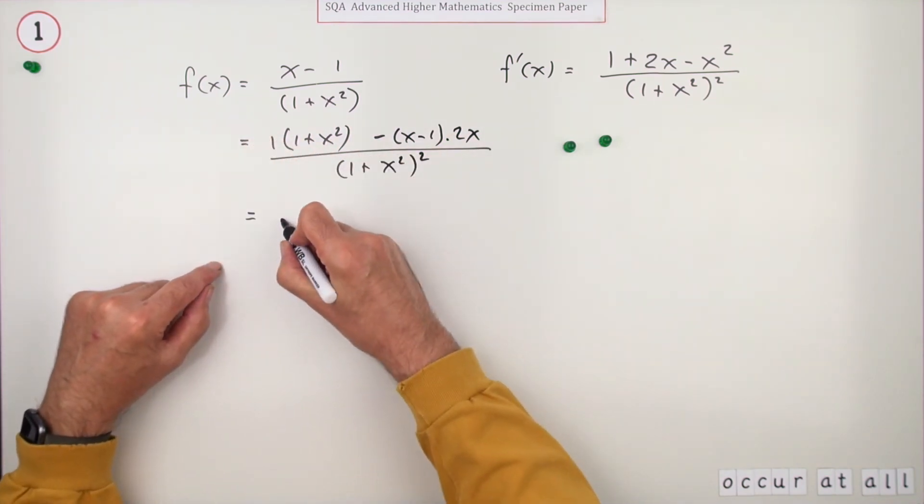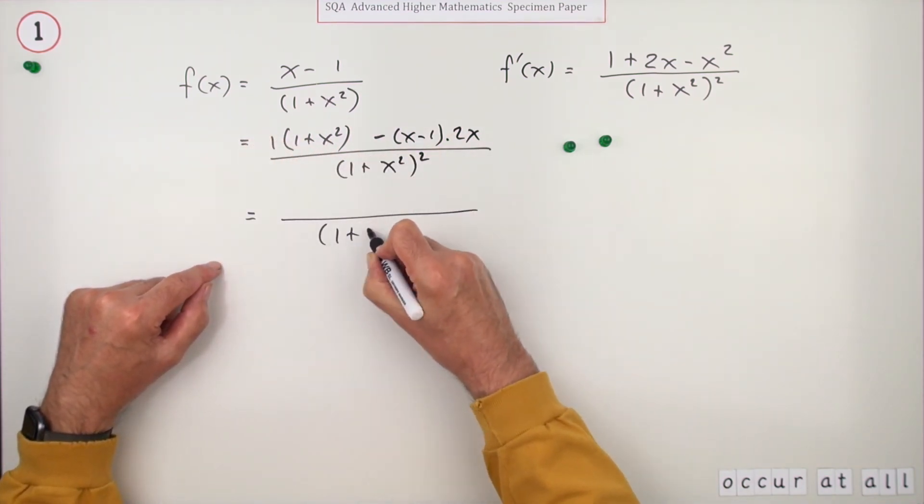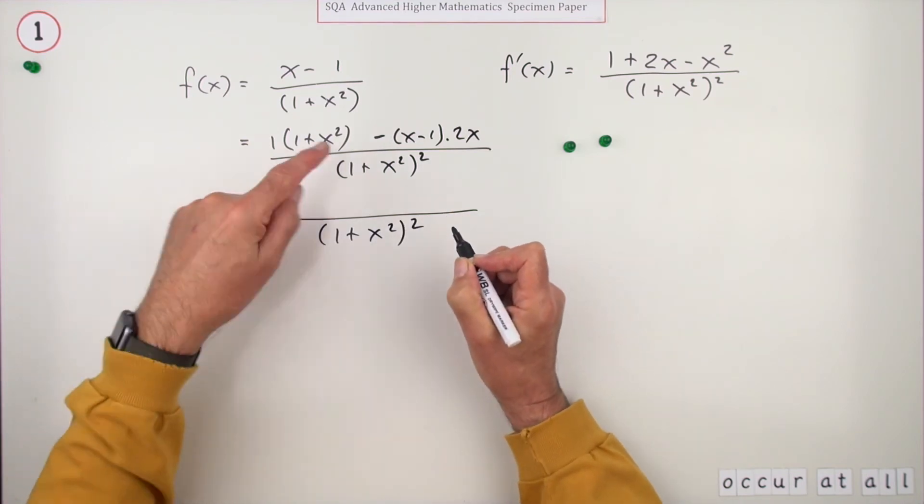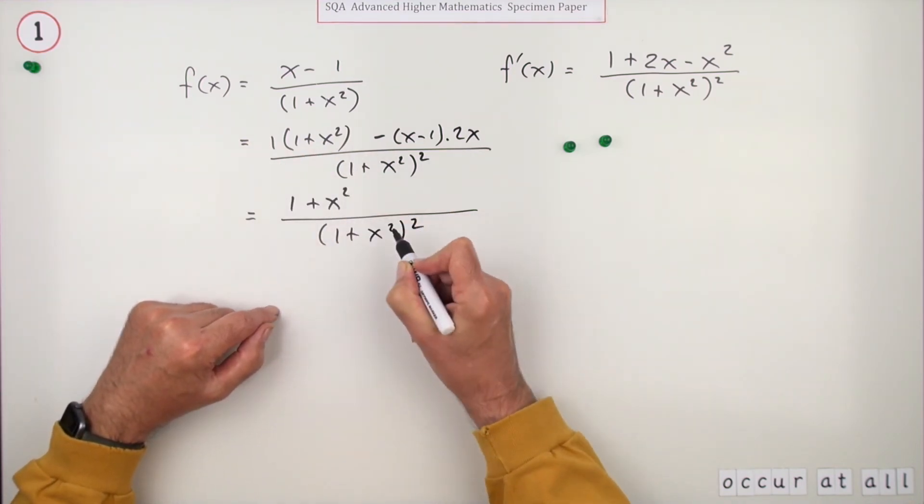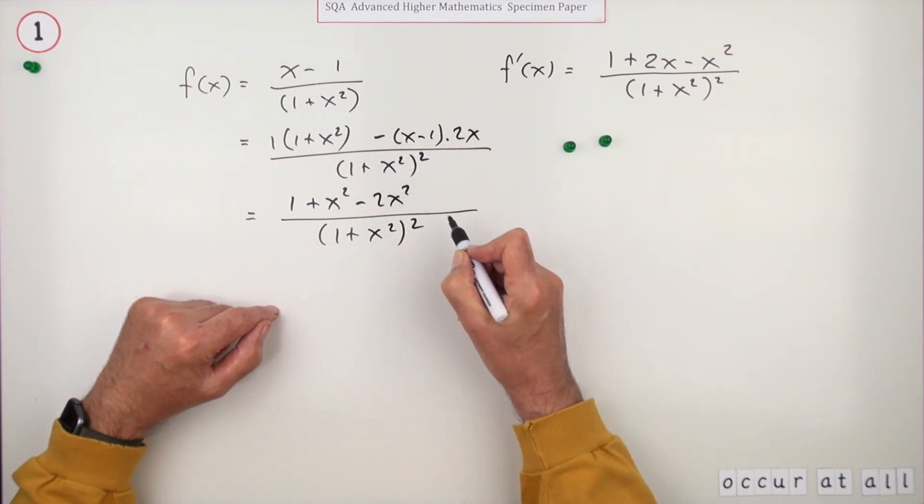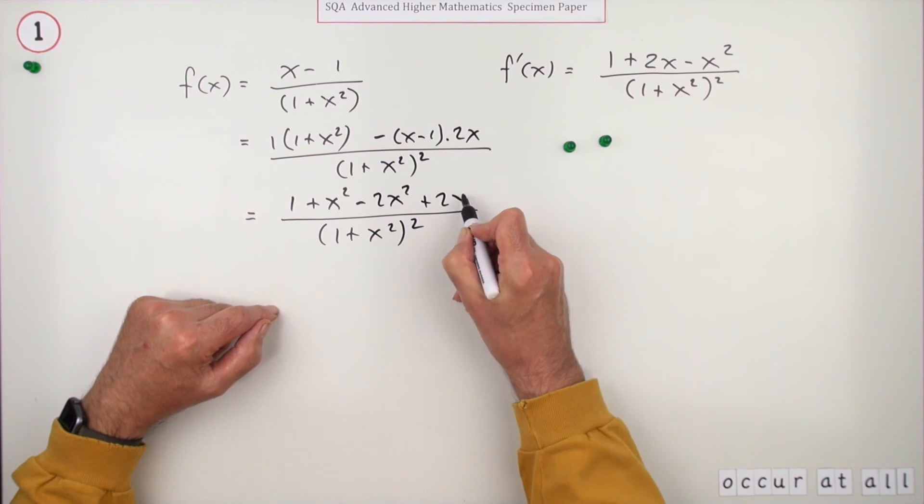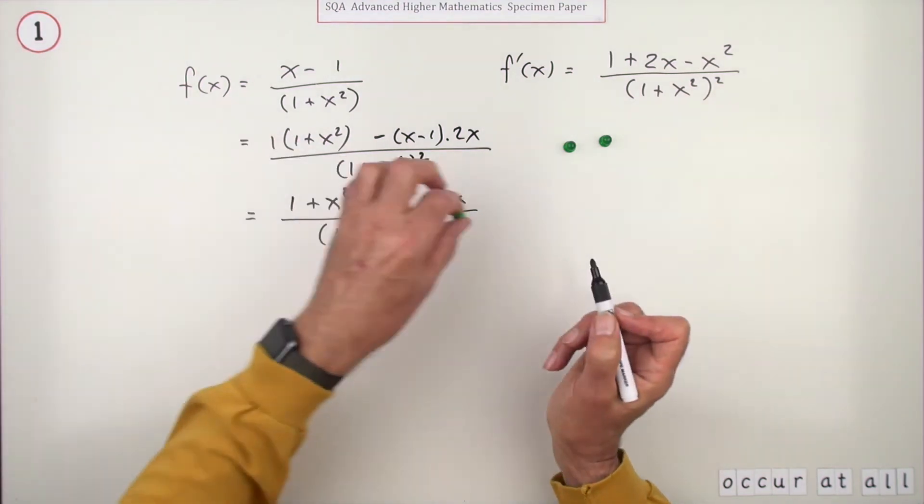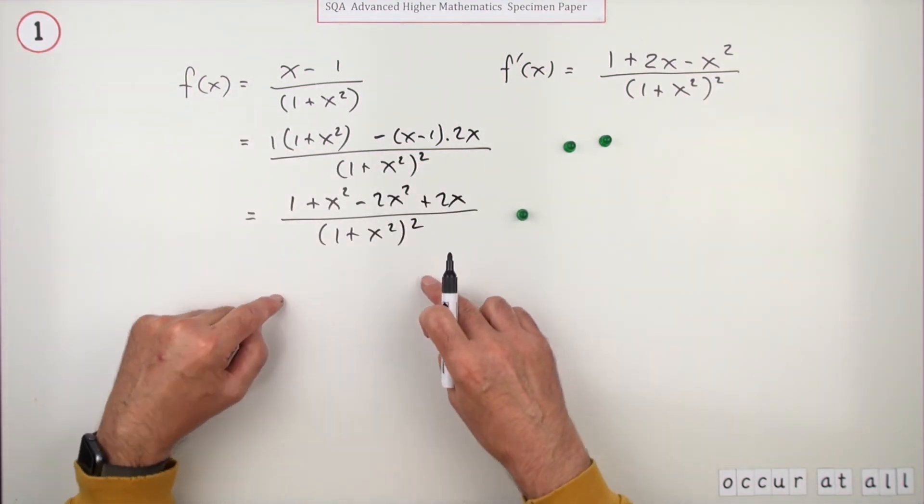simplifying the top there, removing the brackets. One plus x squared squared, so that's just going to be one plus x squared minus 2x squared but plus 2x. There's the third mark because you can't get the fourth mark for finally tidying into this as that was stated already.